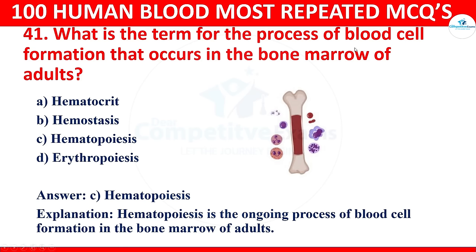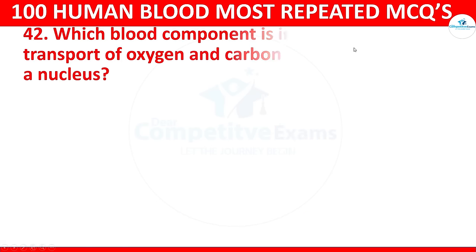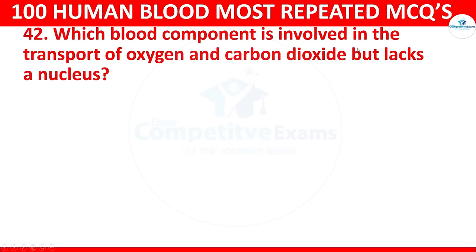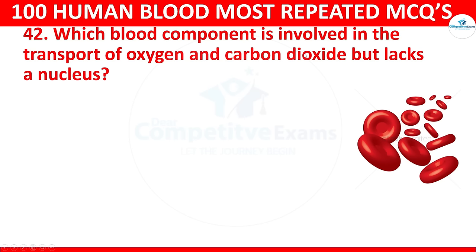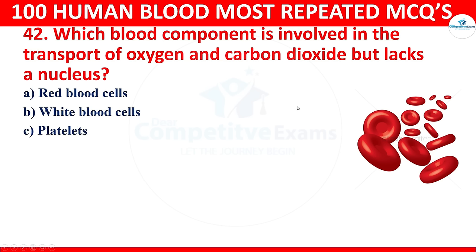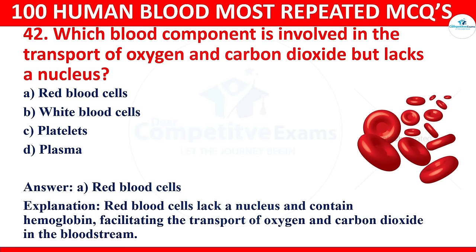Question 42: Which blood component is involved in the transport of oxygen and carbon dioxide, lacks a nucleus, and contains hemoglobin? The correct answer is red blood cells. Red blood cells lack a nucleus and contain hemoglobin, facilitating the transport of oxygen and carbon dioxide in the bloodstream.